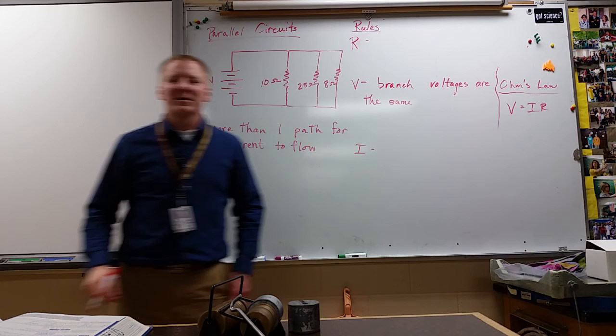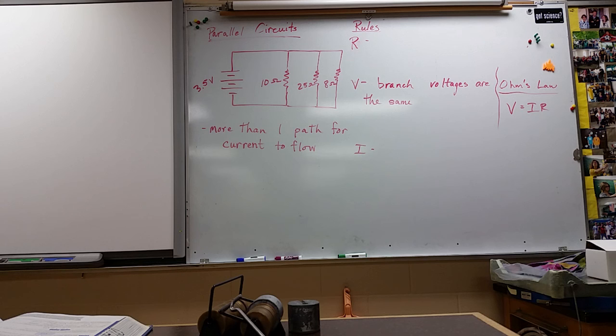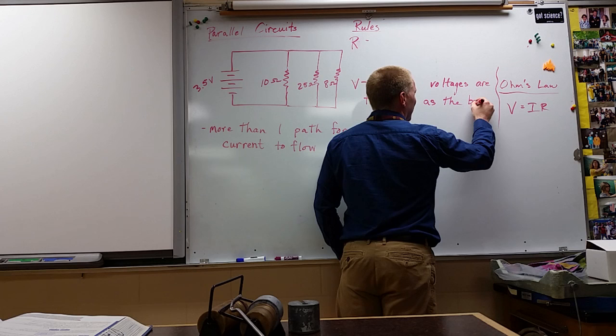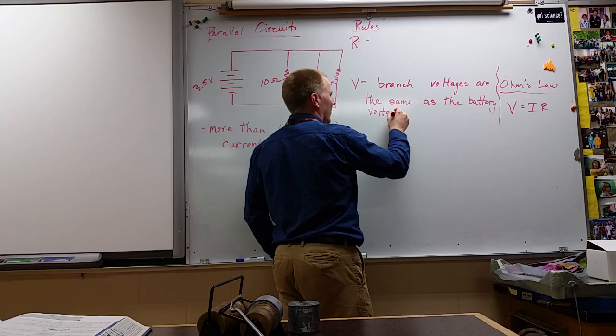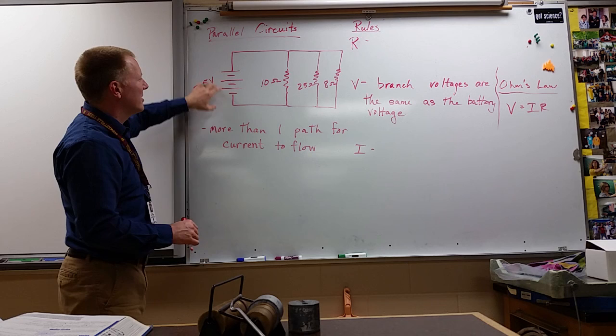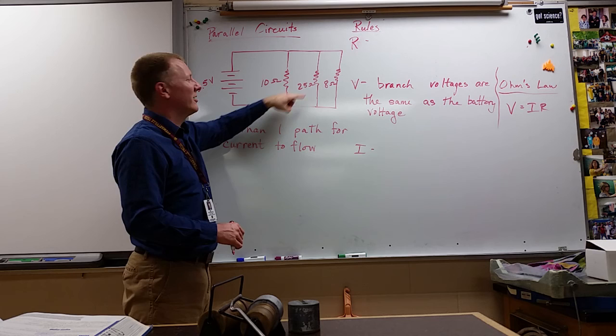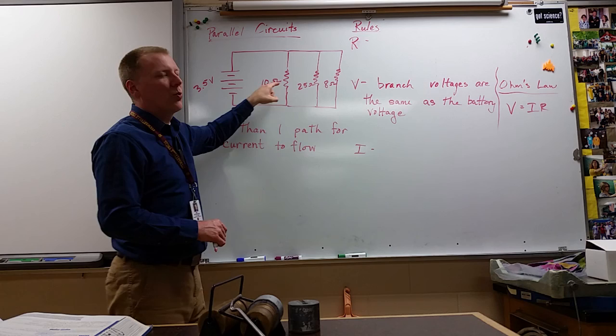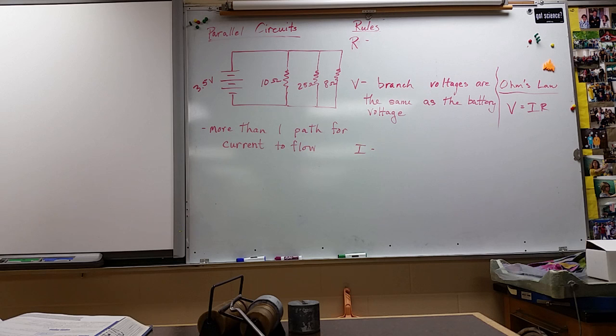And for our rule, we're just going to say that the branch voltages are all the same. What do they also sit the same as, or in your data probably very close to? The battery voltage. The battery voltage, right. And that's again because voltage is a measure of energy. You get the source of the energy. Electrons lose that energy as they go through a circuit. But each electron is really only going through one branch. So it's giving up almost all of its energy just in one of those resistors. So when we measure across it, that's what we find.